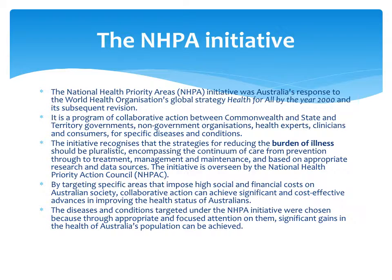The initiative recognises that strategies for reducing the burden of disease need to be pluralistic, meaning based on all different levels of prevention strategies — upstream, midstream, and downstream, or primary, secondary, and tertiary responses. The hope is that by targeting specific areas that impose high social and financial costs, we can improve health outcomes and settings both financially, socially, and through health status within society.